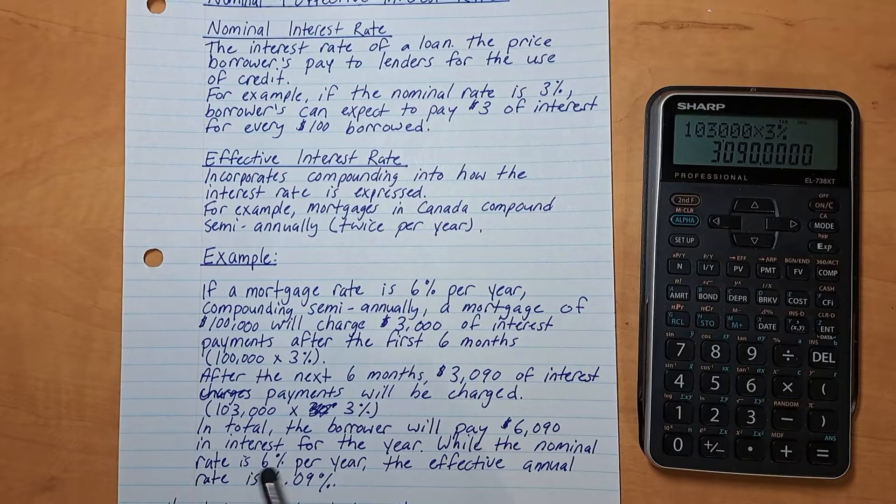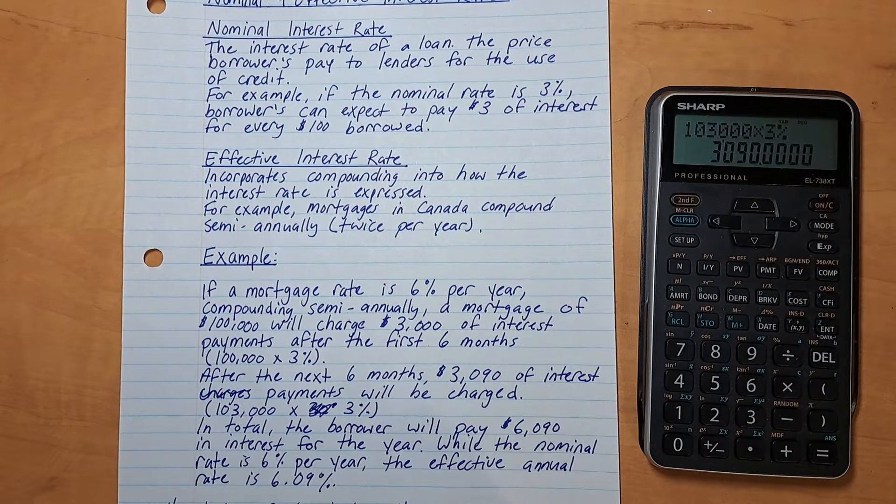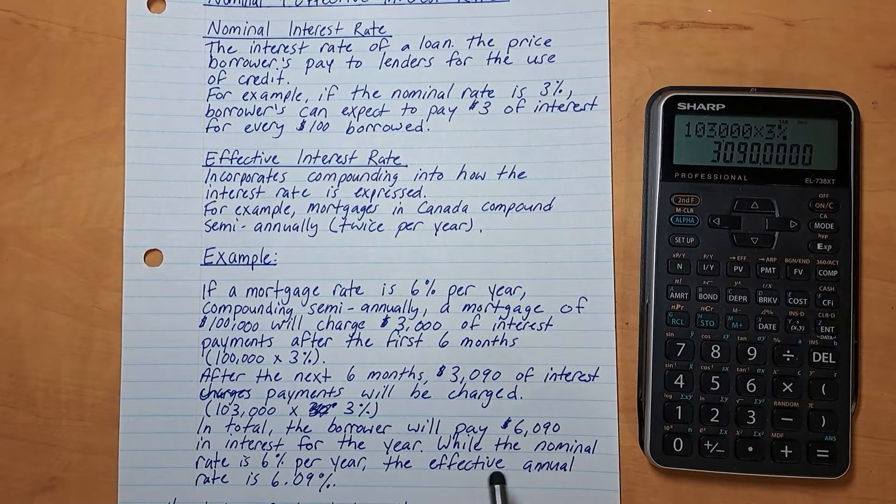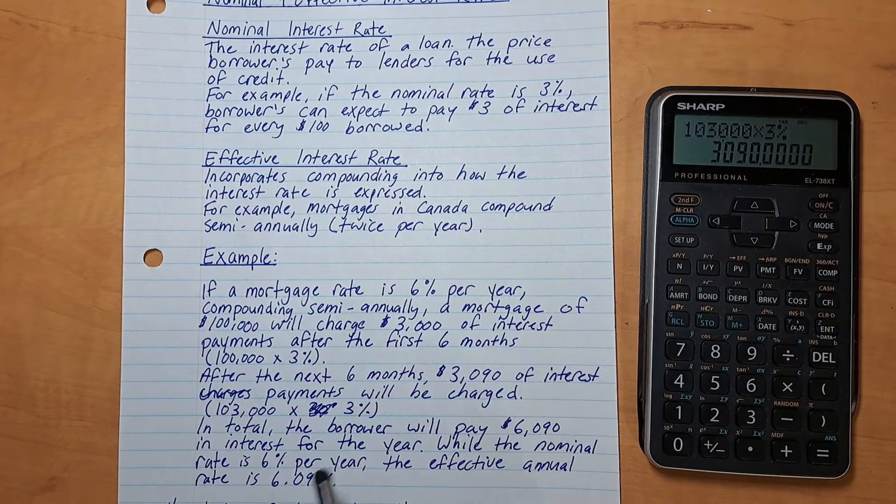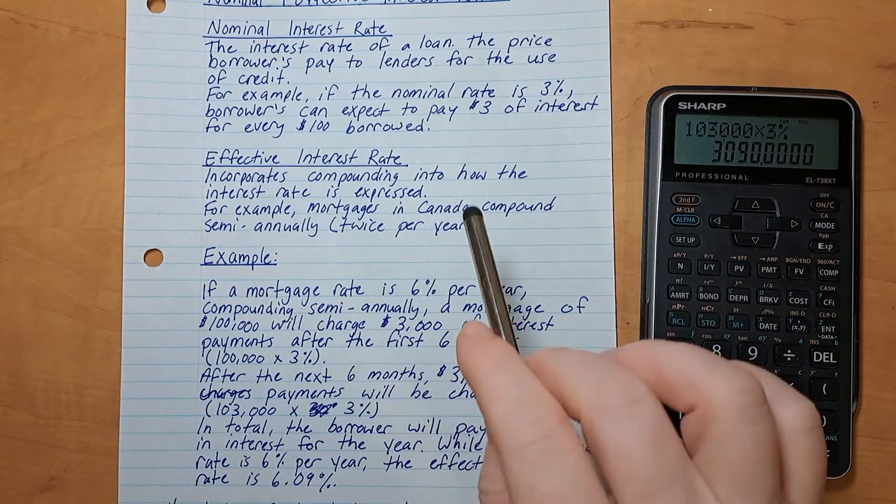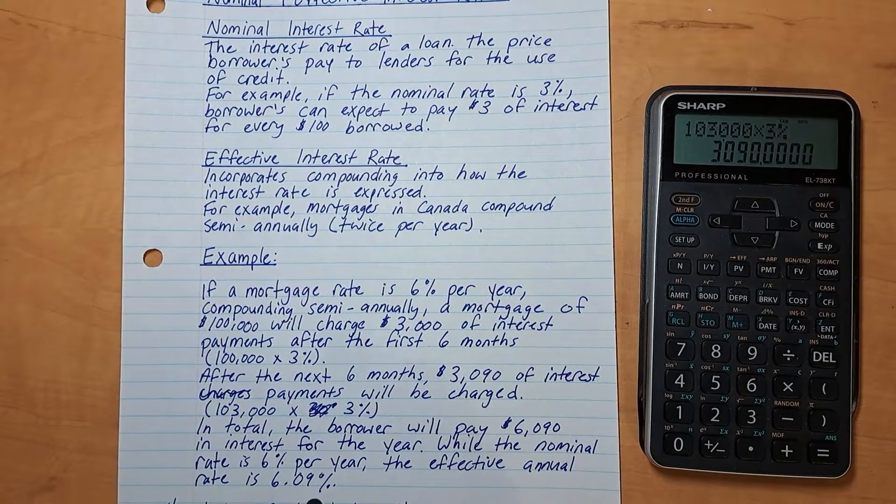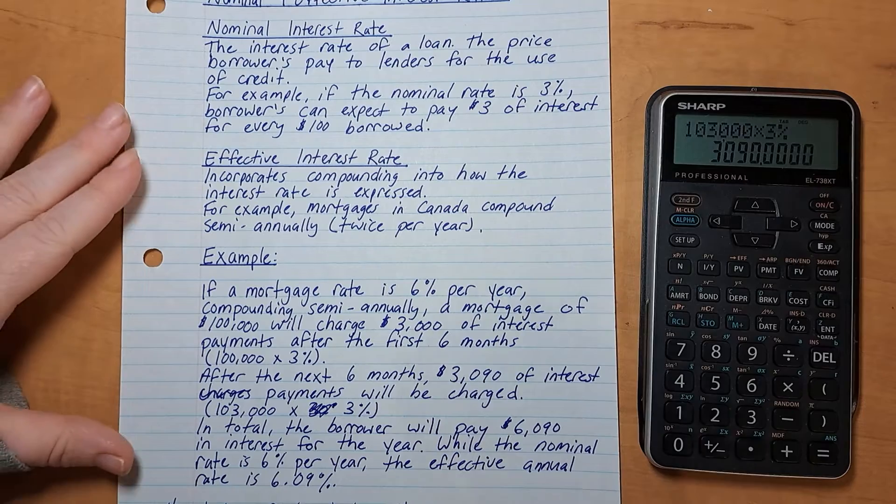So in total, the borrower will pay $6,090 in interest for the year. While the nominal rate is 6% per year, the effective annual rate, which takes compounding into consideration, is 6.09%.